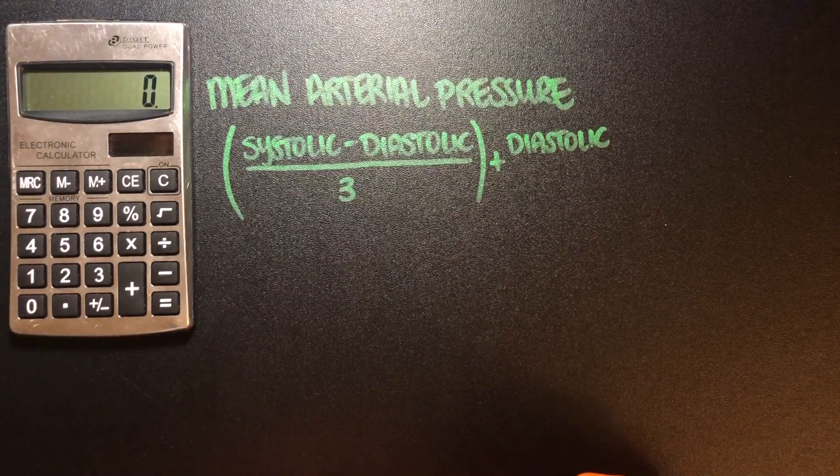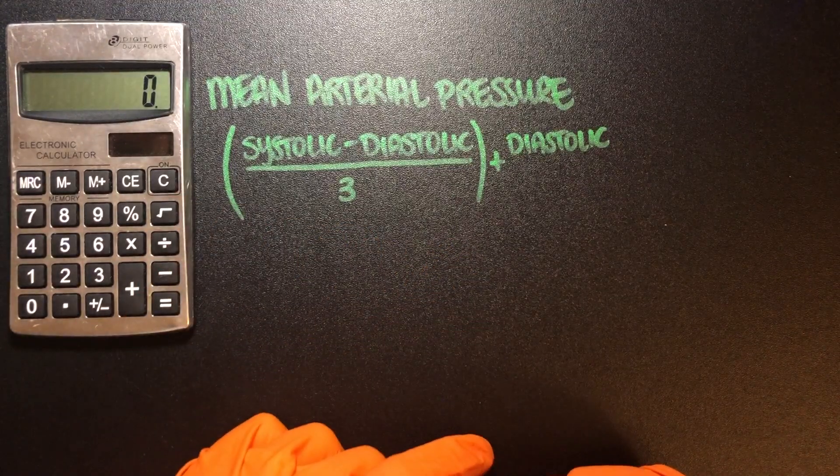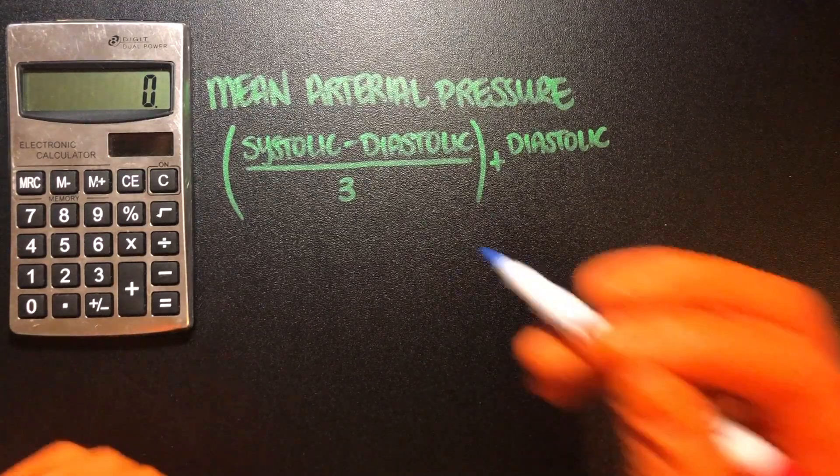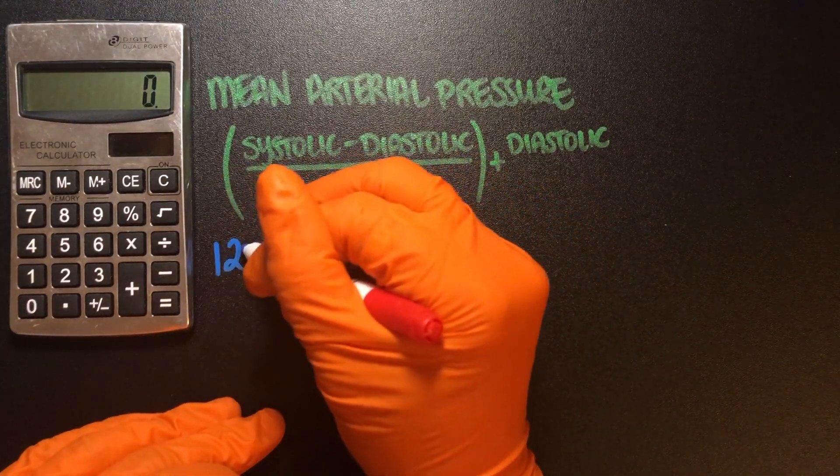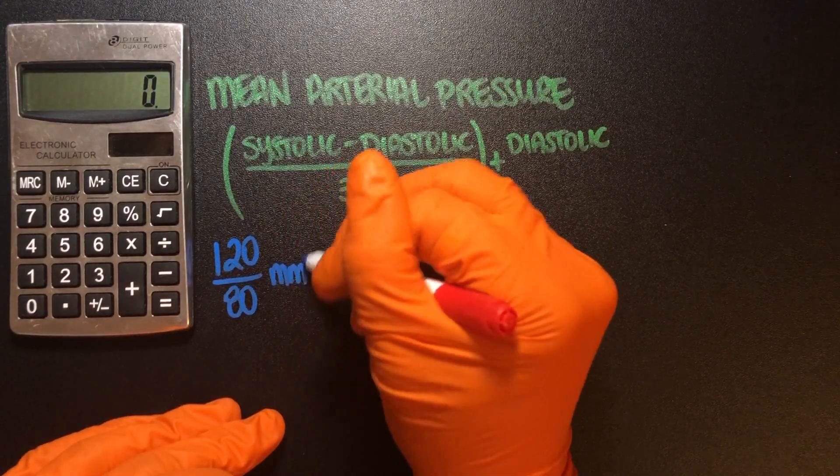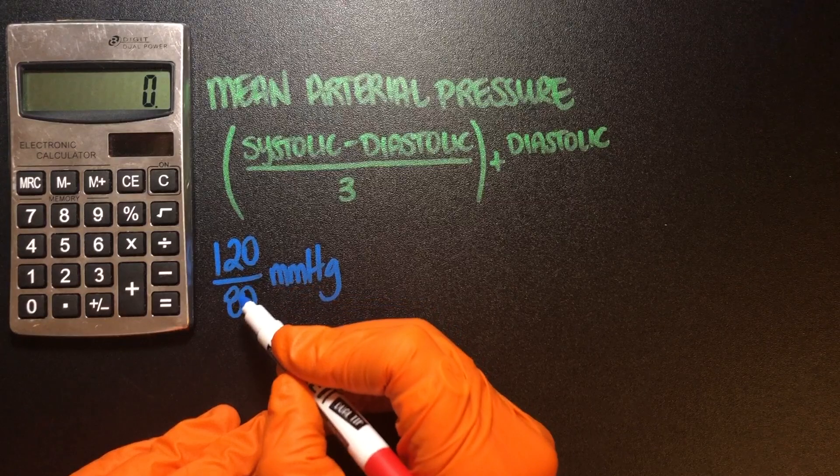So let's go ahead and jump into the calculation and I'll show you exactly what numbers to push to find this. So let's just use our classic 120 over 80 millimeters of mercury. We have systolic and diastolic.